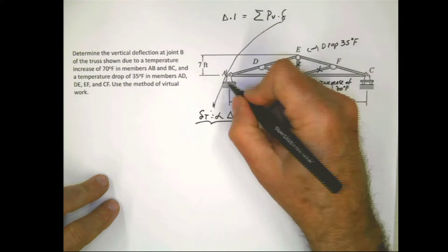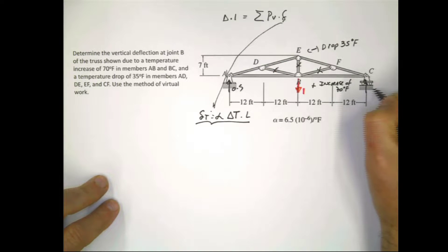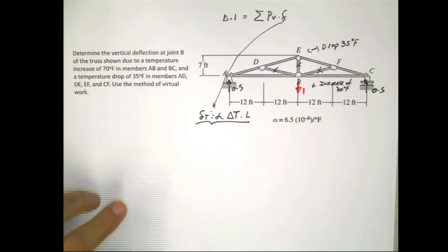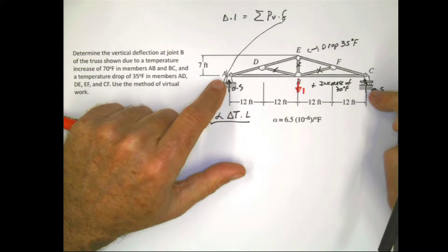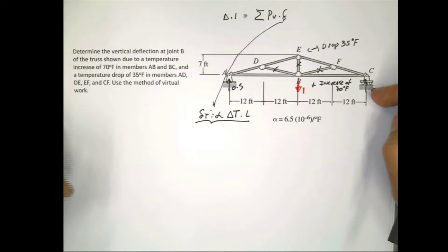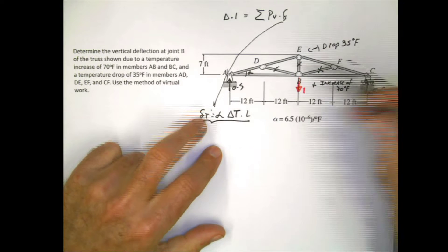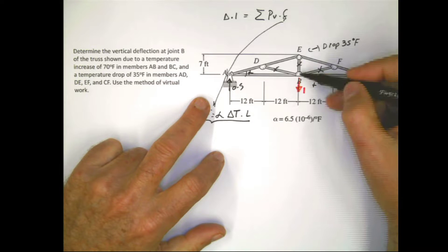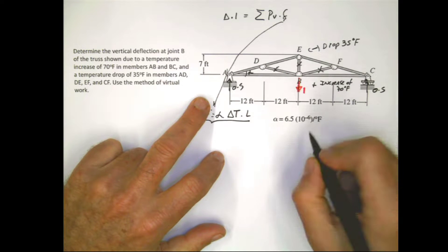So let's start with the reactions, 0.5, 0.5. You don't have to calculate them because this is symmetric, everything is symmetric. You put 1 here, this is 0.5, this is 0.5. So if you want to calculate the forces AD, you can calculate this angle alpha or you can use these triangles, 7, 24, and you calculate this member.